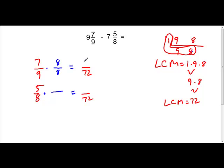And so 7 times 8 is 56. And 8 times 9 equals 72. Magic 1 is 9. So we have 5 times 9 is 45. So we have 56 over 72 and 45 over 72.